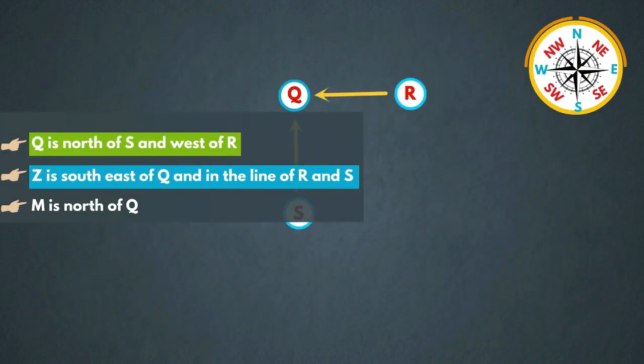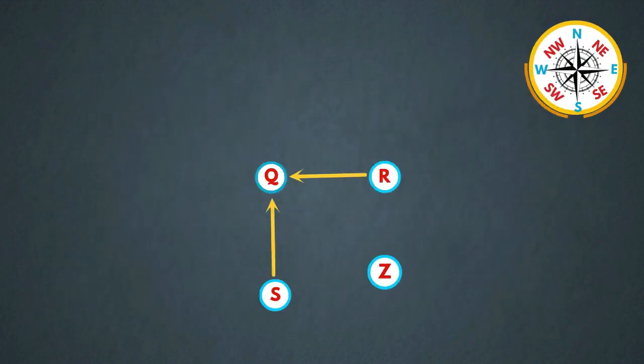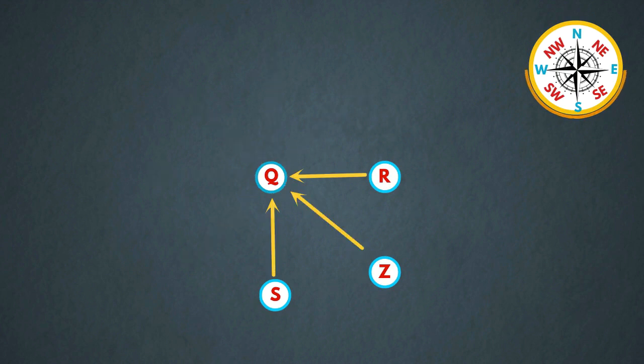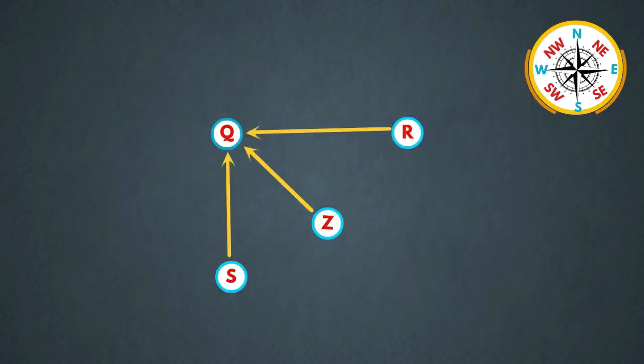In the next statement they also given that Z is southeast of Q and in the line of R and S. Here this is Z and southeast of Q. Here Z is in the line of R and S.